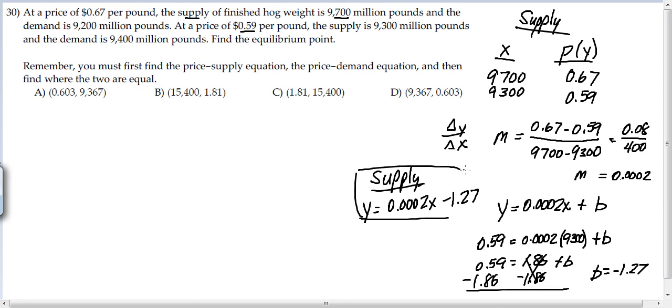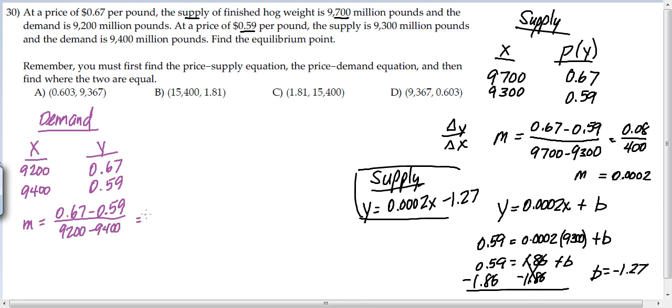Now we've got to go do the same thing for demand. So I went ahead and wrote down my demand numbers. So now we're going to take a change in Y. So let's not make that same mistake, 0.67 minus 0.59 in the numerator. And then the denominator will have 9,200 minus 9,400. So we get 0.08 divided by 200. So here we get, and sorry, that should be a negative 200 on the bottom. So we get a final answer here of negative 0.0004. That's the slope of that line.